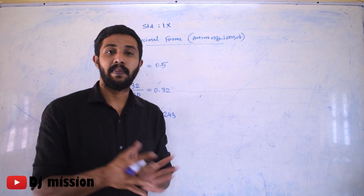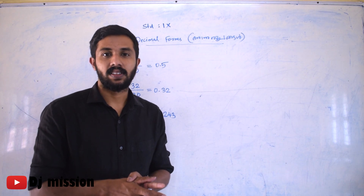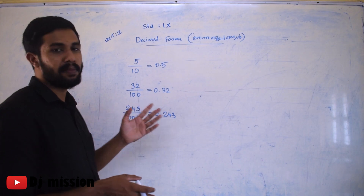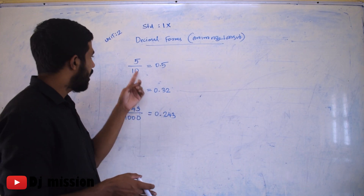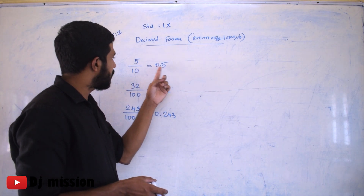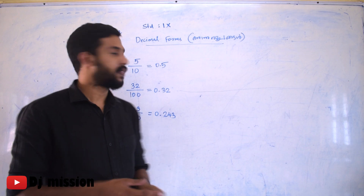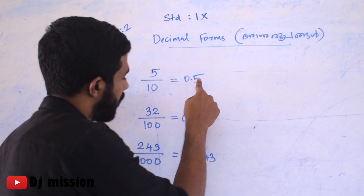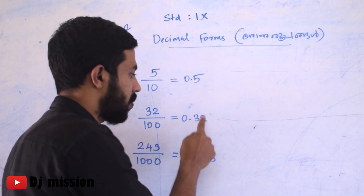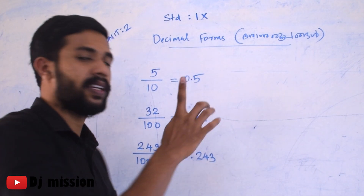These are rational numbers: 5 by 10, 32 by 100, 243 by 1000. Also 35 by 100, 34 by 100. The denominators are 10, 100, and 1000.